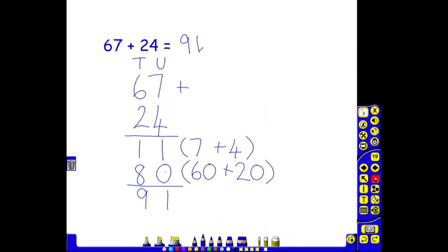This might seem quite a long-winded method. However, it's slowly getting children used to realizing that the vertical method is a quick and easy method to use. But it is doing that, showing them that first of all they've got to add the units, then they've got to add the 10s, which is slightly different from the partitioning method that they've used up until now.